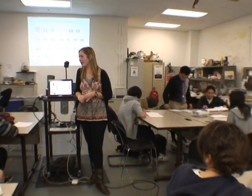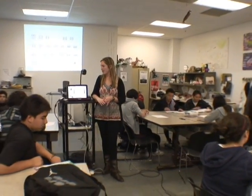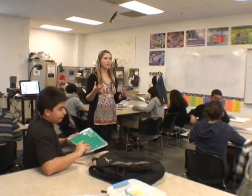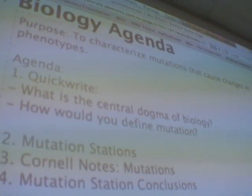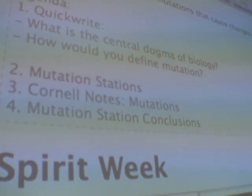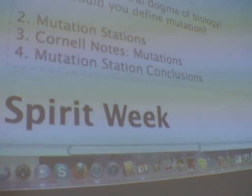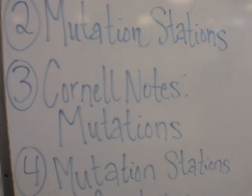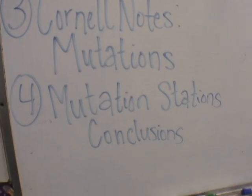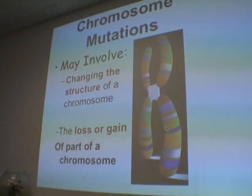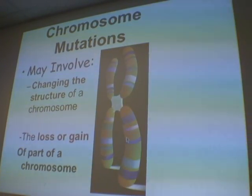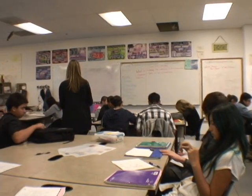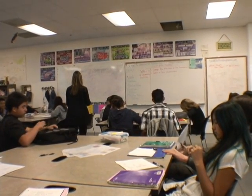You will probably need your mutation Cornell notes to finish this. At your desk you should have all six station cards. Based on your observations, your predictions, and now the information from your Cornell notes, I would like you to write 'I know' and tell me which mutation each station has — is it a point mutation, a deletion, an insertion, or a chromosomal mutation?